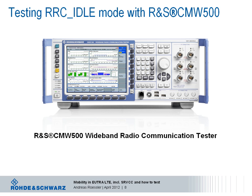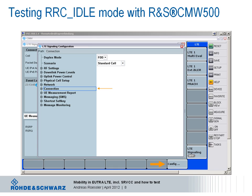In a real network, after cell selection, if there is no data to be received or transmitted, the device moves into idle mode. In this mode, it switches off transmitter and receiver and only occasionally wakes up to listen to the paging channel. It is obvious the device should consume less power in this mode. With the CMW500 wideband radio communication tester from Rohde & Schwarz, configuring the device to move into idle mode is straightforward via the configuration button.